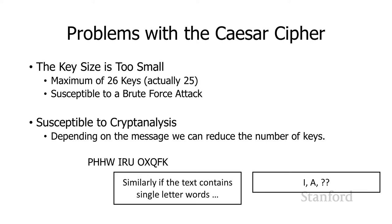Looking at the Caesar cipher, there are two different things keeping messages safe: the number of keys — which as we saw is really weak with the Caesar cipher — and the algorithm itself. What was keeping the Caesar cipher 'safe' was that people didn't realize it was a shifting algorithm, so they thought it was gibberish and didn't know how to break the code.